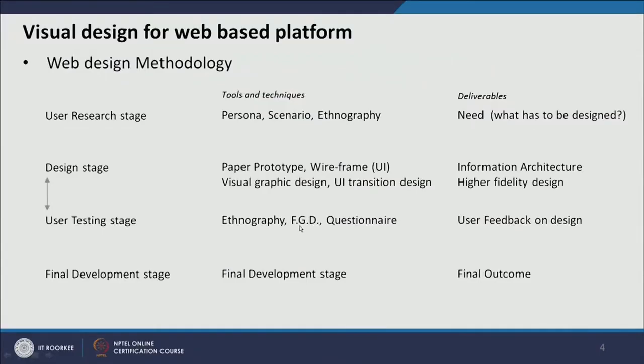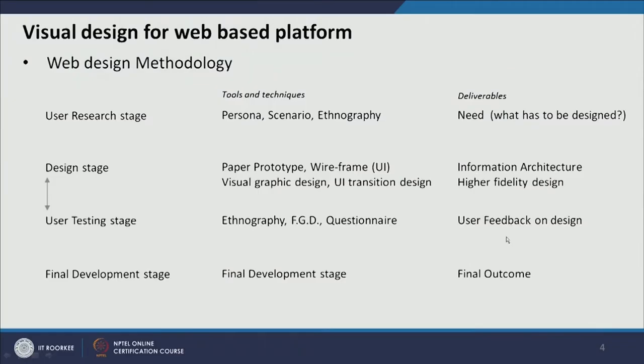In user testing, the tools and techniques include ethnography, focus group discussions (FGD), questionnaires, and documentation. The deliverable is understanding the user's feedback on the design — what needs to change, whether a smaller iteration or a major modification is needed, or even if the design does not work at all and we need to start from the beginning. The design and user testing cycle repeats until the design is finalized.